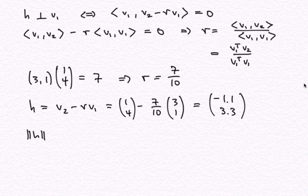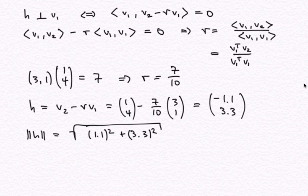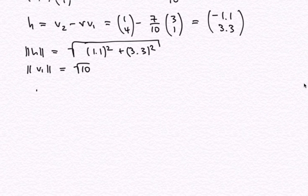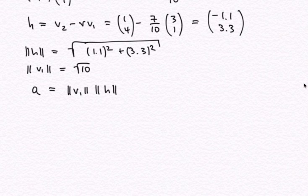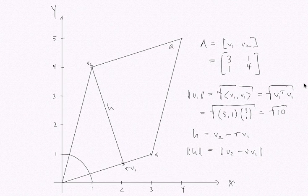We can calculate the length of h as √(1.1² + 3.3²), which is a non-integer. We already know the length of v1 is √10. Then the area A = |v1| × |h| — the product of these two numbers — turns out, somewhat surprisingly, to be the integer 11. We have answered the question of the area of this parallelogram. Now we want to connect this to matrices and their determinants.